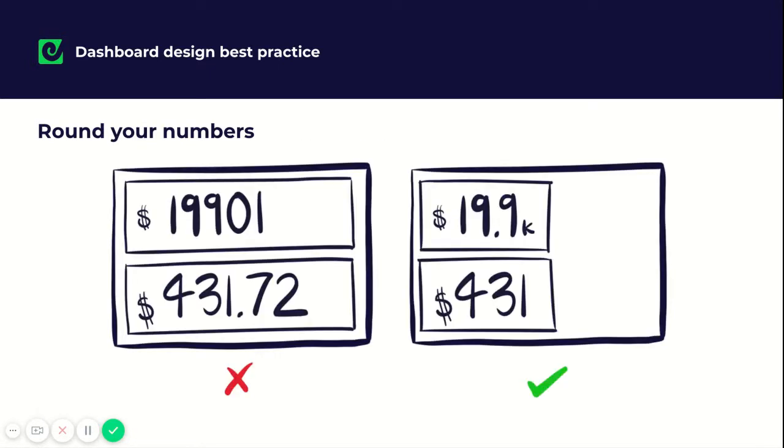You will want to round your numbers and that's because it makes it much clearer and quicker for the person viewing your dashboard to take in the information. If you look at the example here on the left-hand side, it's not super obvious. Whereas you look at the right-hand side, you can quickly and easily take in those numbers.